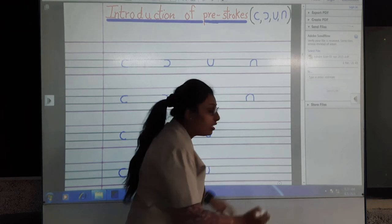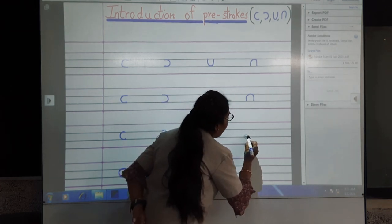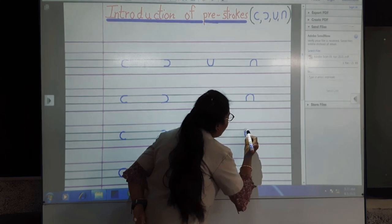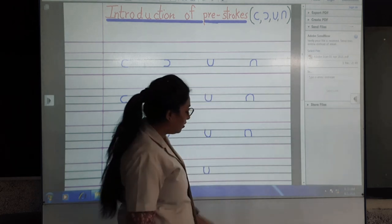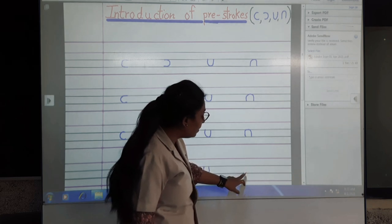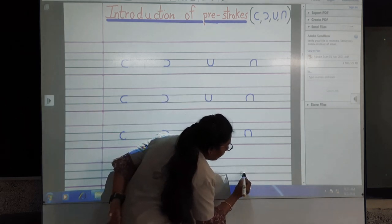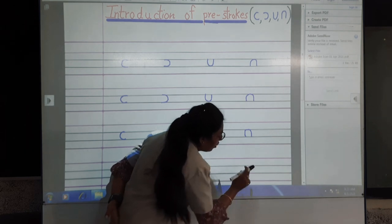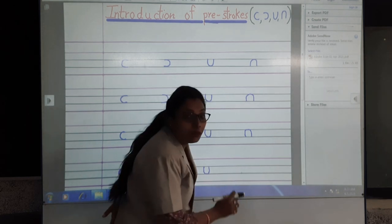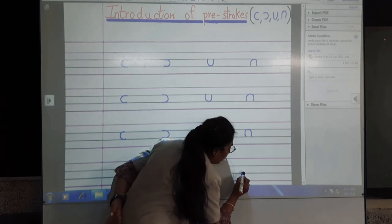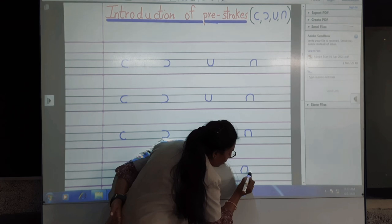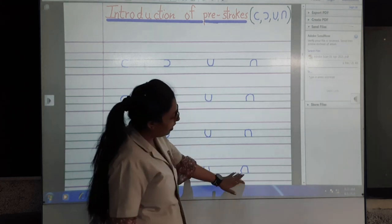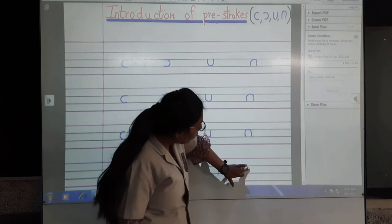Same way, see from third line again, you go up, touch the second line and touch the third line. First, second, third line, line third, touch, again third line, stop.